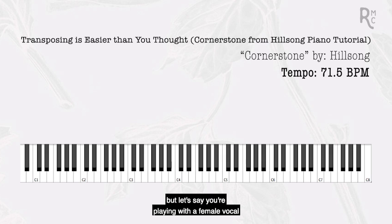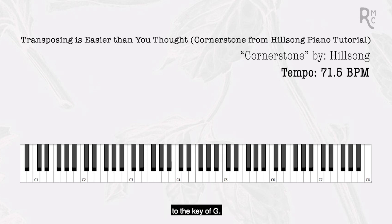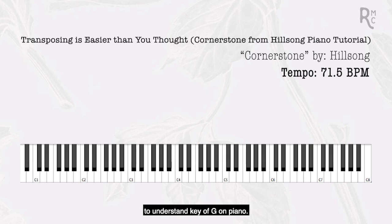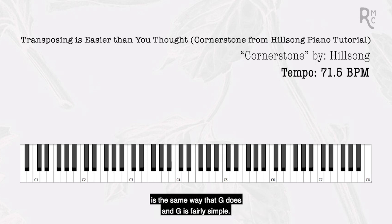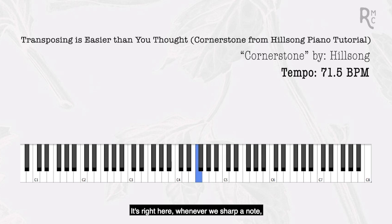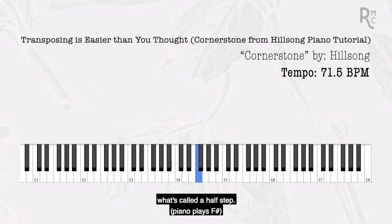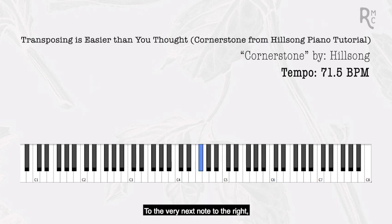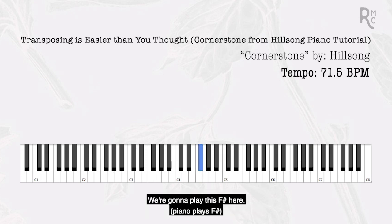That sounds great, but let's say you're playing with a female vocal lead instead of a male vocal and need to change from the key of C to the key of G — that throws a wrench in everything you've practiced. We need to understand the key of G on piano. The only rule for G is that all F's must be sharp. To sharp a note means we bring it up a half step to the very next note to the right.